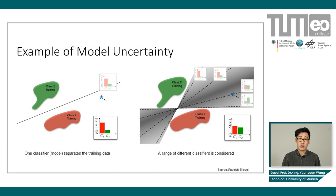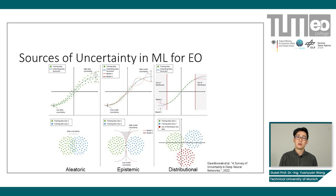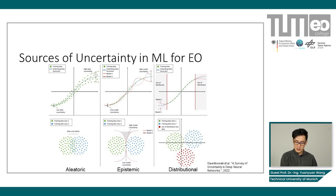This is an example of uncertainty in machine learning models. There are different types of uncertainty, and it is generally agreed in the community that there is so-called aleatoric uncertainty, which means uncertainty coming from the data, and epistemic uncertainty, which means model uncertainty.